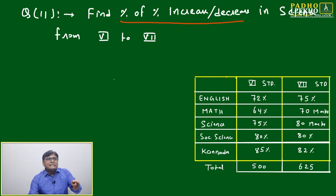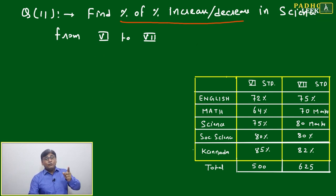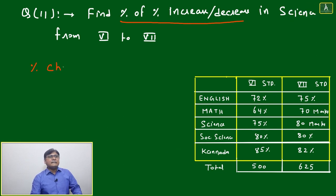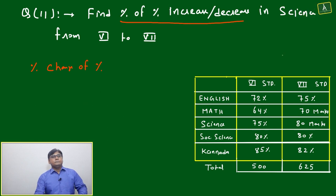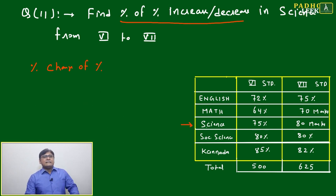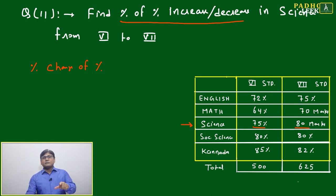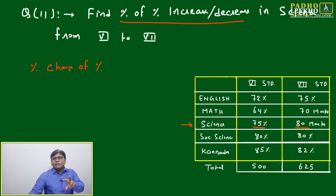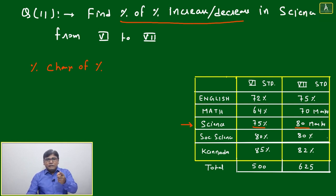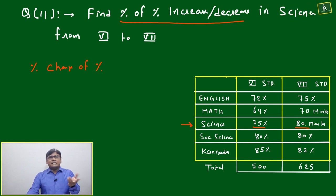The question asks for the percentage increase or decrease in science from sixth to seventh standard. The data is already given in percentage, and you have to find the percentage change of percentage. The subject is science, and the data is given in percentage format.